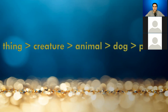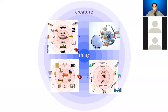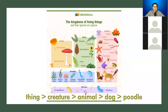What does this have to do with thing, creature, animal, dog, and poodle? 'Thing' is just about anything — vehicles, birds, furniture, and weapons are all things. It is an extremely general category. 'Creature,' in contrast, is more specific. The kingdom of living things — what Langacker calls creatures — includes multiple biological kingdoms.